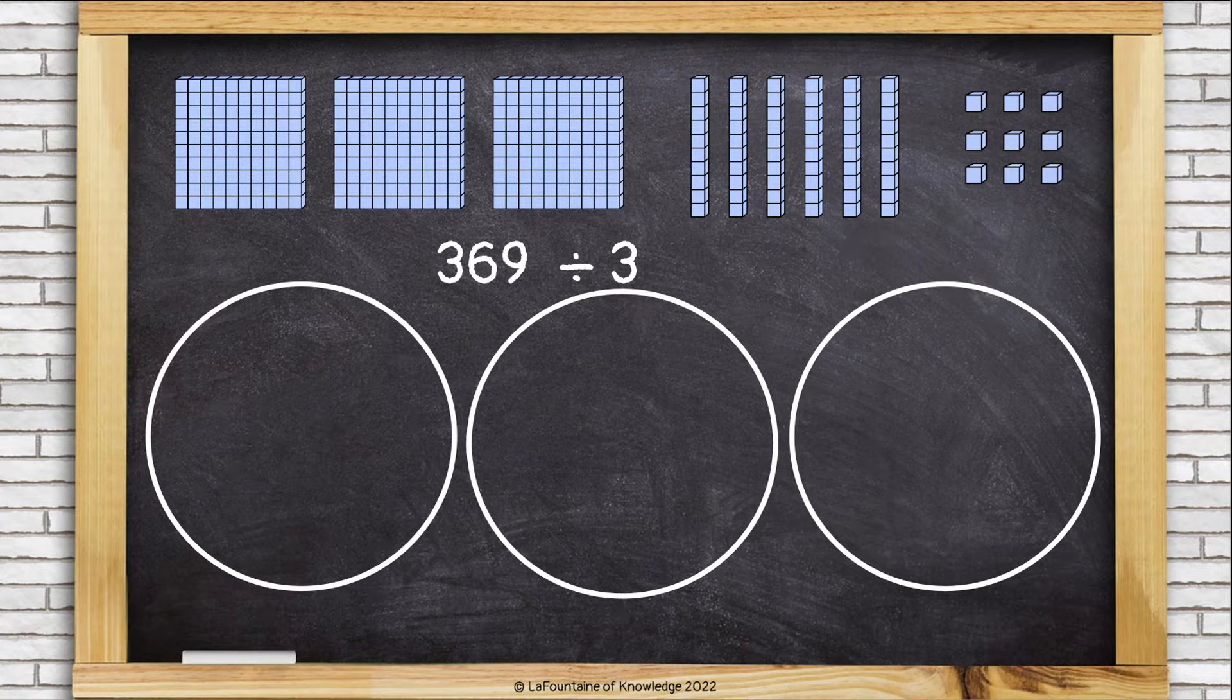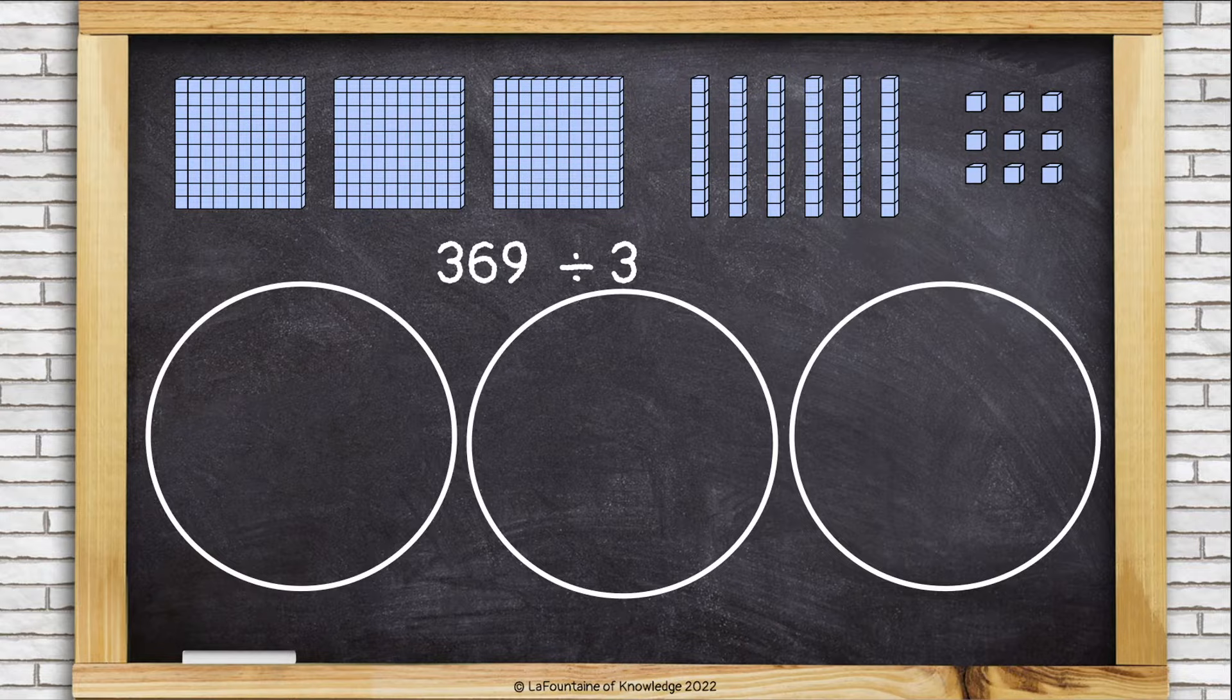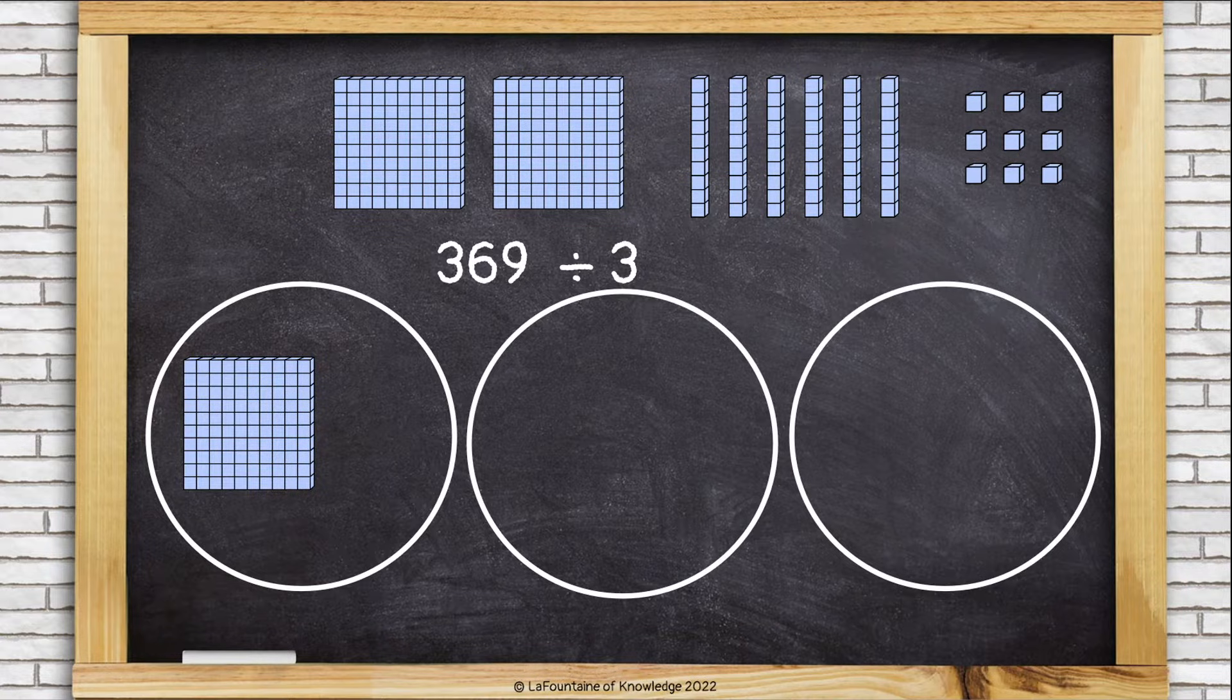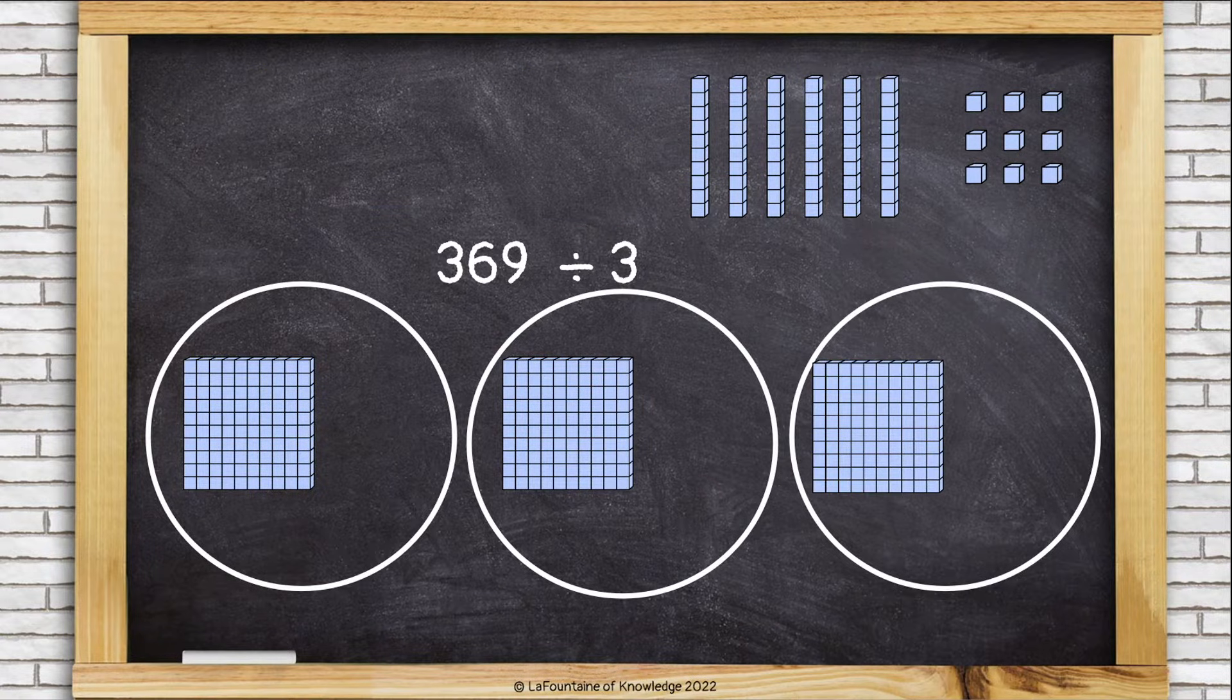Now, let's start dividing. We're going to start with the hundreds and we're going to think about it like dealing cards, giving each group a hundred at a time like this. Okay, that worked out.